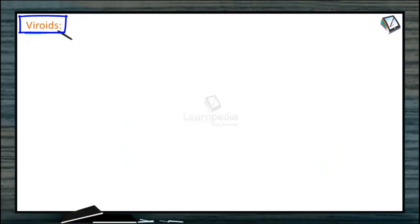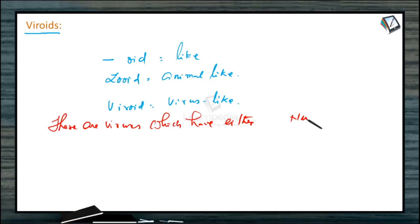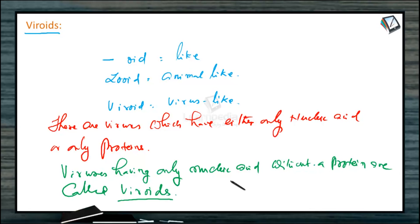Viroids. Anywhere in biology if you get the syllable 'oid,' it means 'like.' For example, zooid means animal-like. Viroid means virus-like. There are viruses which have either nucleic acid or proteins. So viruses having only nucleic acid without a protein coat are called viroids. The viruses have only proteins without a nucleic acid.